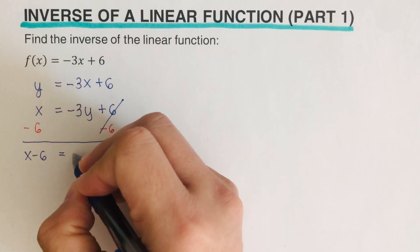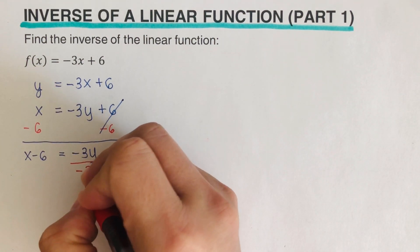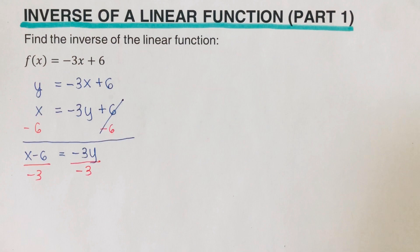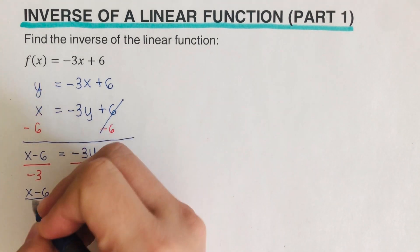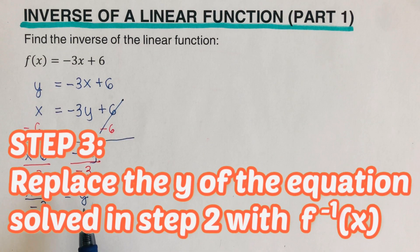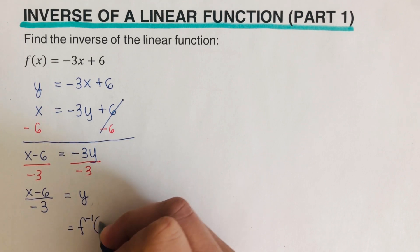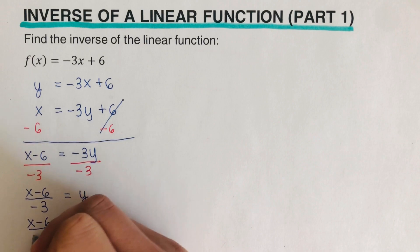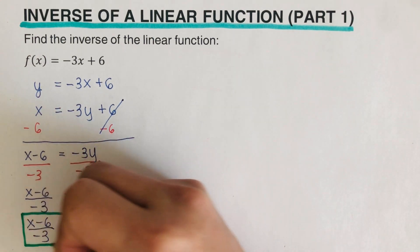We divide both sides by -3, leaving us with y = (x - 6) / -3. That completes the second step. For the third step, we replace y with f⁻¹(x), giving us f⁻¹(x) = (x - 6) / -3. This is the inverse of the original function.